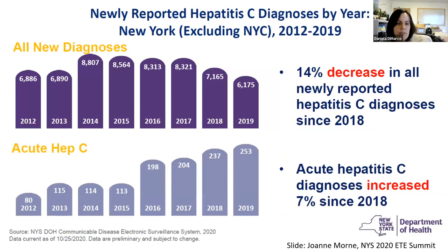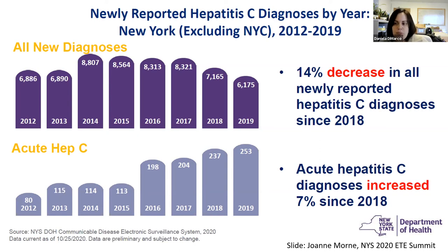Regarding hepatitis C, we see fluctuating new diagnoses per year with a 14% decrease in all newly diagnosed hep C since 2018 — definitely an improvement. However, there's been an increase in acute hep C diagnoses since 2018. About 49% of people with newly diagnosed hep C were under 40, and 87% of those individuals under 40 had a history of injection drug use. That appears to be the primary community where we're seeing increasing hep C rates. 60% of new hep C diagnoses in women were in women of reproductive age in 2019.